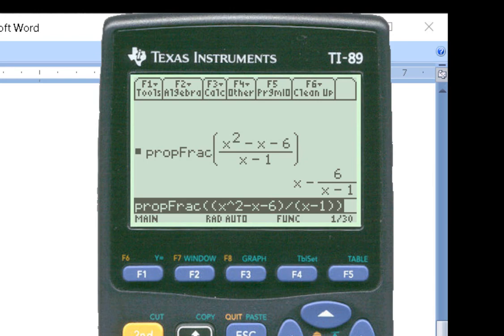I get x minus 6 over x minus 1. So if you were to use long division for example and divide this out, then your quotient would be x and your remainder would be minus 6.